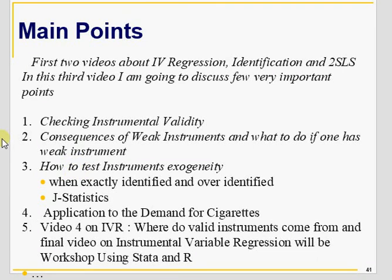Welcome to this third video on instrumental variables. In the first two videos we discussed instrumental variable regression and general instrumental variable regression, along with identification, definition, and two-stage least squares. In this video I am going to discuss relevance of an instrument, checking instrumental validity, checking instrumental exogeneity, what happens if you have a weak instrument, and how we test whether instruments are endogenous or exogenous.